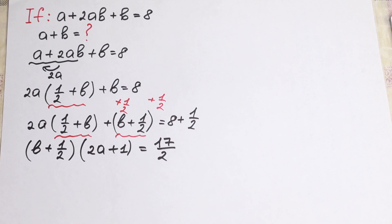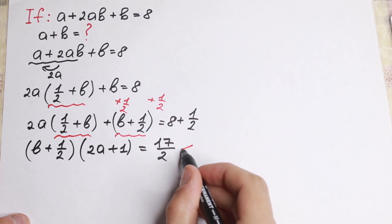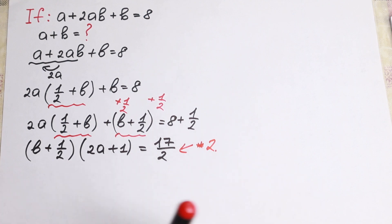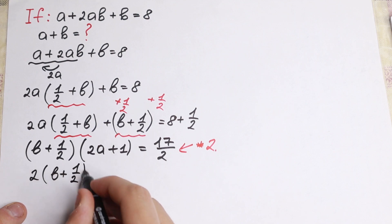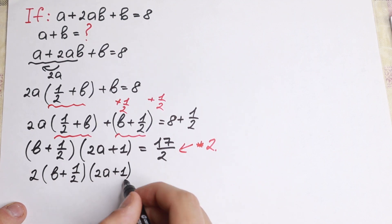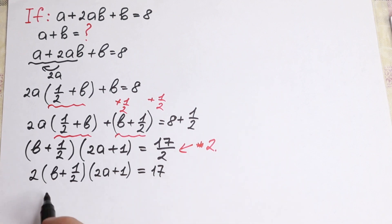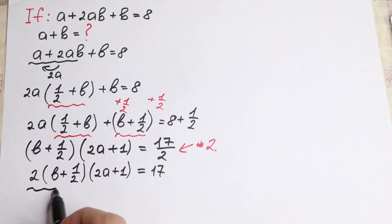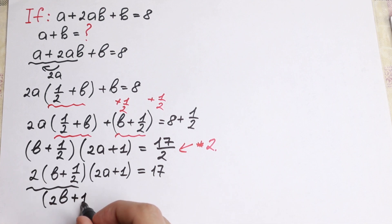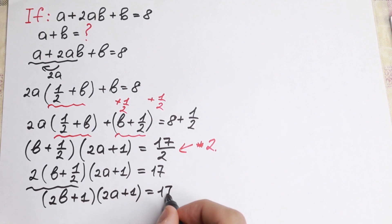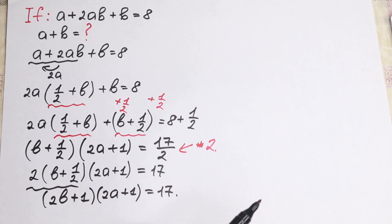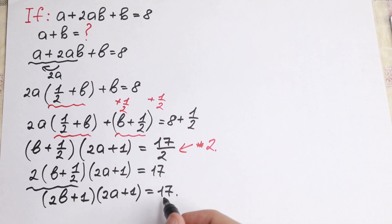It's really good to multiply both sides by 2, because we don't need this fraction. Multiplying by 2, we will have 2 times (b plus one half) times (2a plus 1) equal to 17. We cancel the 2 and one half, and we will have (2b plus 1) times (2a plus 1) equal to 17.